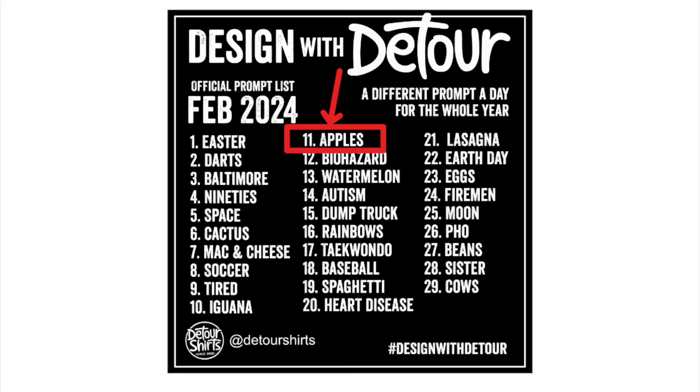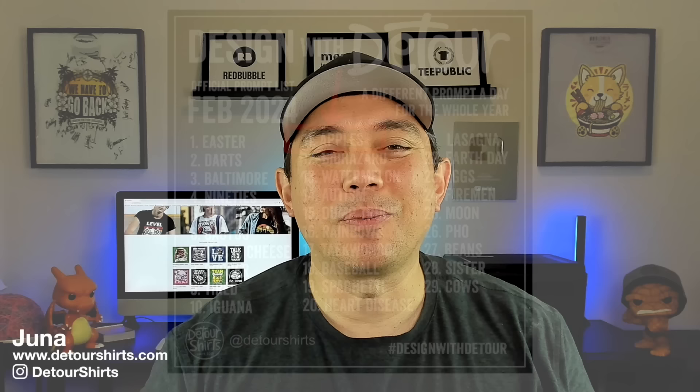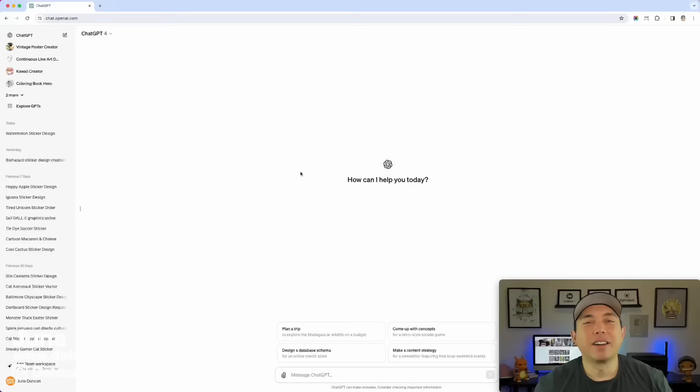So let's get into ChatGPT first. I'll show you all the prompts I used for this New York or this Apple design. The prompt was Apple, but I went for Big Apple for New York. You can see all the prompts I used, and then I'll show you all the steps step by step.